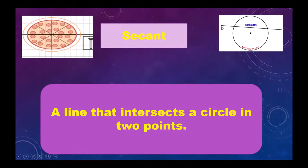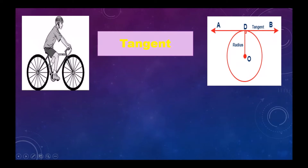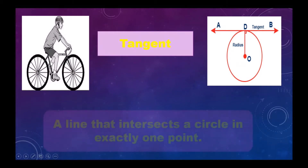Secant: a line that intersects a circle in two points. See, this is a line intersecting the circle in two points.